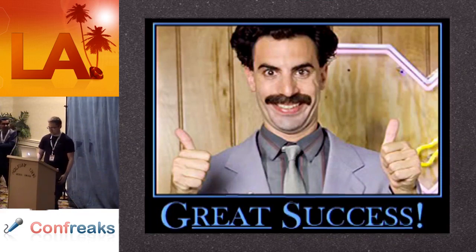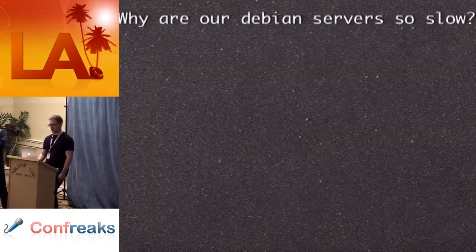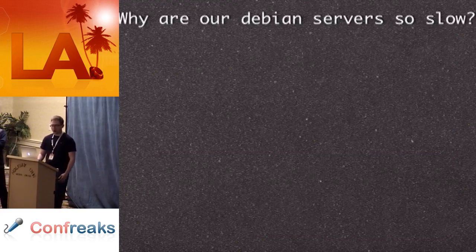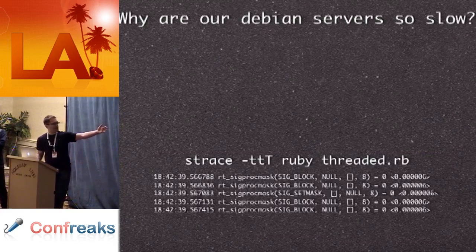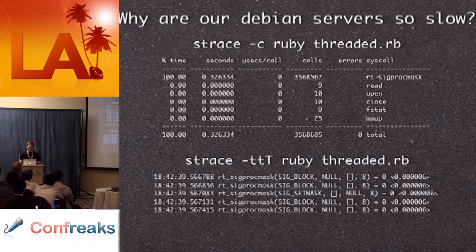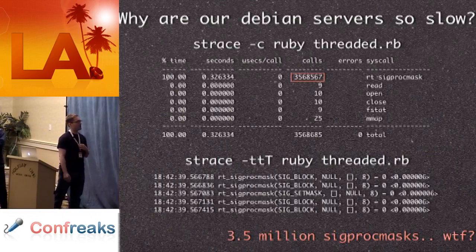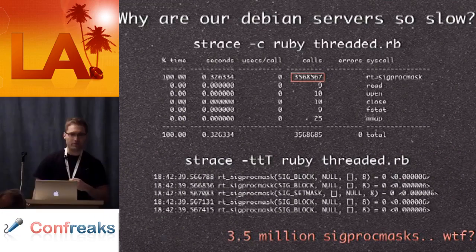The next big performance improvement on the threading implementation: we used Debian servers in production. We straced our Ruby process because it was really, really slow. So we attached strace, saw all these calls to sigprocmask, and thought: let's get a count of how many of these calls there are — it looks like a lot. We ran strace and there were three and a half million calls to sigprocmask in about 100 seconds, which is a large number of system calls.